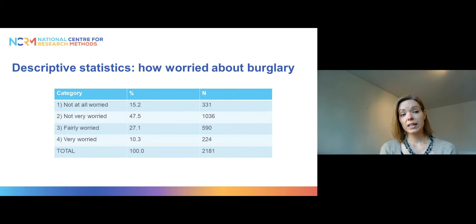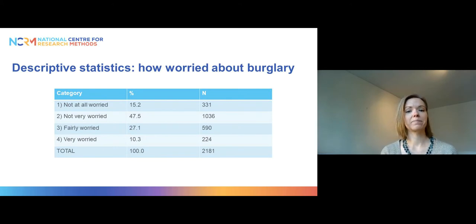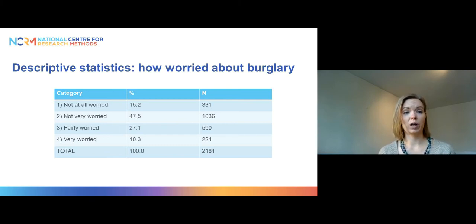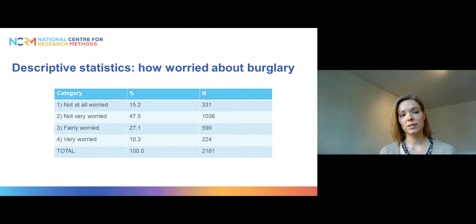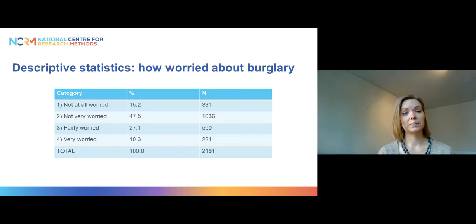We are interested in investigating whether this worry varies by gender and education. Our outcome variable is how worried people are about burglary, with four ordered categories: one — not at all worried, two — not very worried, three — fairly worried, and four — very worried.